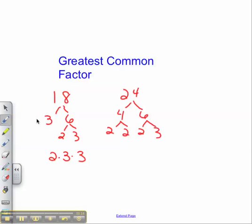We then need to line up the common factors of 18 and 24. The common factor of 2 and 3 would go under the 2 and 3.